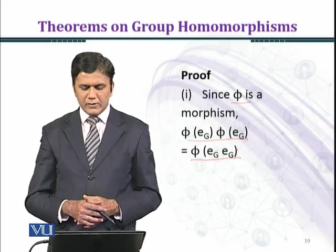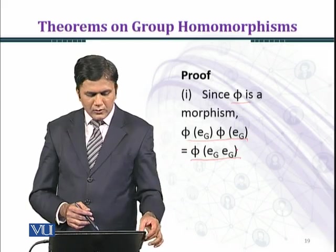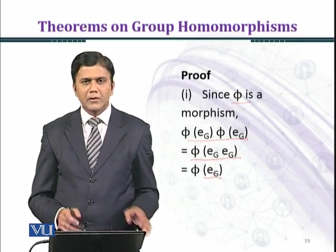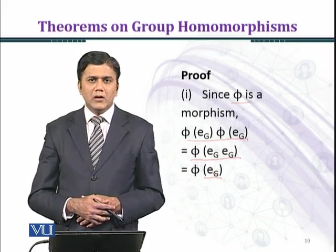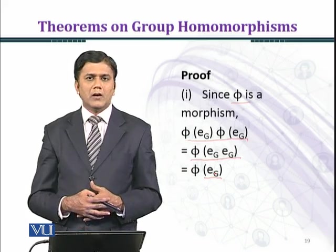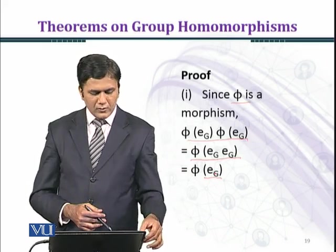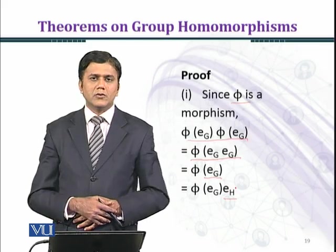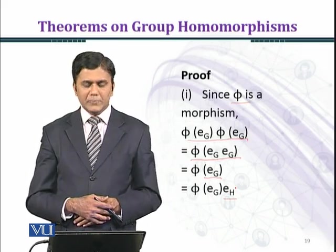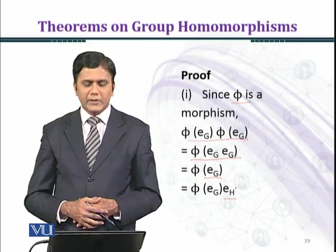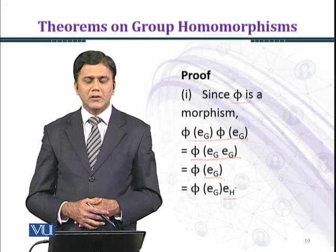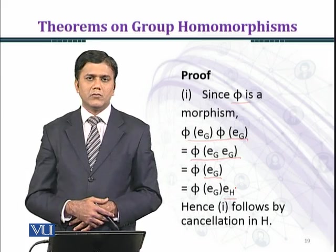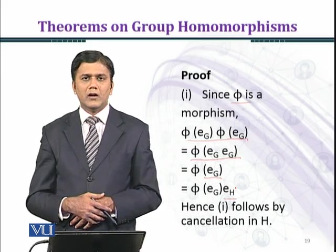And as you know, E_G is the identity element of G, so E_G times E_G gives the identity element. We shall obtain phi(E_G), which is an element placed in group H, and phi(E_G) times E_G — the identity element. If you multiply phi(E_G), then you will have phi(E_G). So we are done in case one.